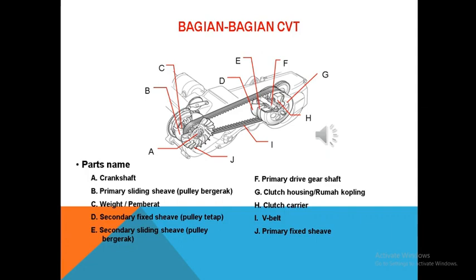Yang ketiga adalah pemberat atau Roller. Roller di sini berfungsi sebagai bantalan keseimbangan gaya berat yang berguna untuk menekan dinding dalam puli primer sewaktu terjadi putaran tinggi. Yang keempat, Primary Fixed Pulley atau Puli Tetap berfungsi menahan sabuk atau sebagai lintasan agar sabuk dapat bergerak ke bagian luar, mengatur kecepatan berdasarkan besar gaya tarik sabuk yang diperoleh dari puli primer.